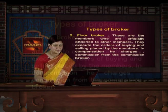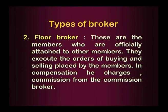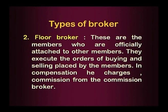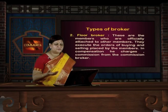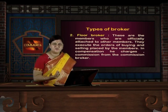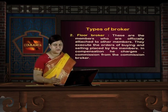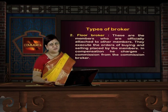Another form of broker is the floor broker. A floor broker is one step below the commission broker — his dealing is with the commission broker rather than with the client directly. These are members who are officially attached to other members. They execute the orders of buying and selling placed by the members, and in compensation charge commission from the commission broker. So the reportable authority to the floor broker is the broker or member of the stock exchange, not the clients.